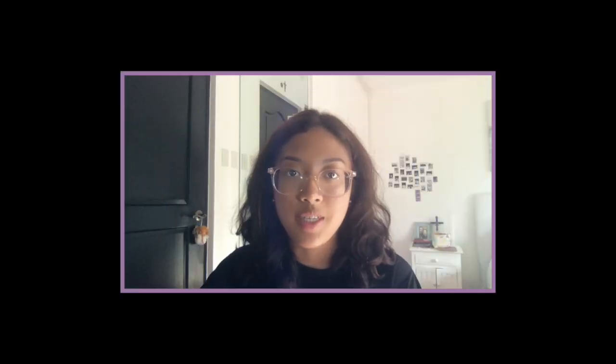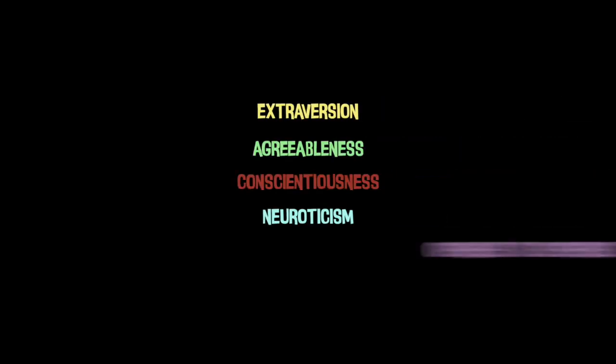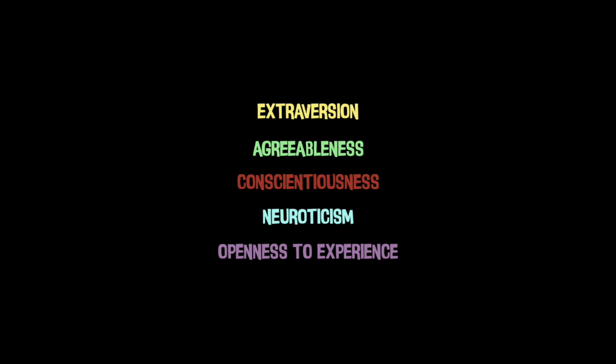Robert McRae and Paul Costa's five-factor model of personality is a hierarchical organization of personality traits in terms of five basic dimensions: extraversion, agreeableness, conscientiousness, neuroticism, and openness to experience.